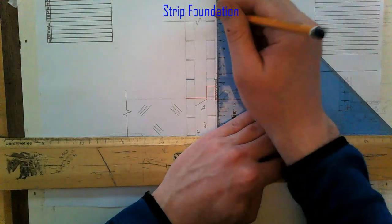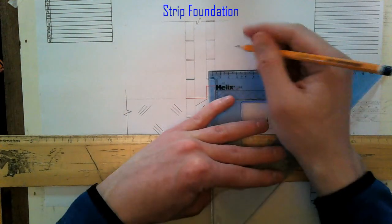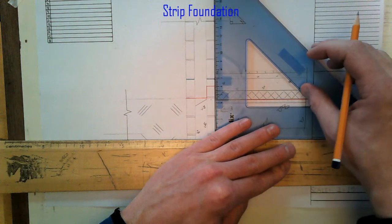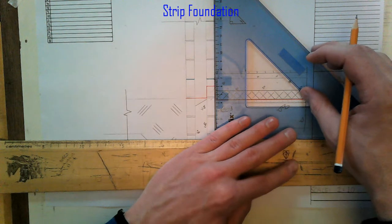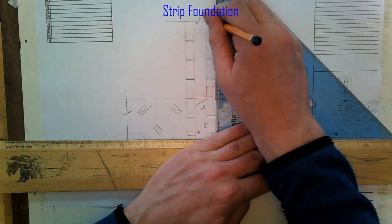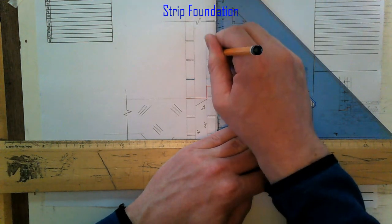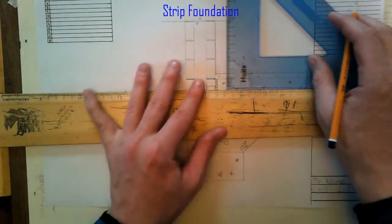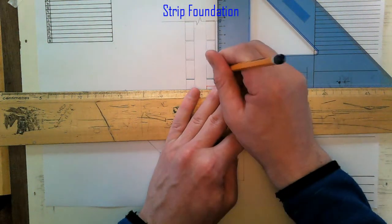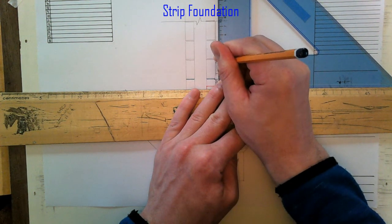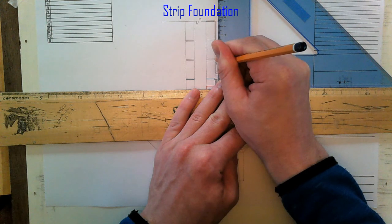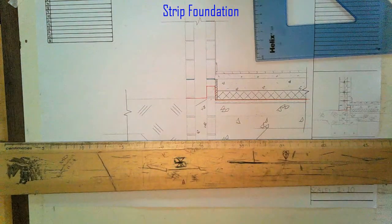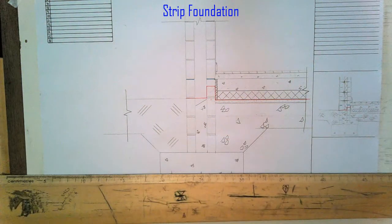So we've got our internal render here. That's my internal render. And then our skirting boards on top of that, sitting on top of our floor like so.